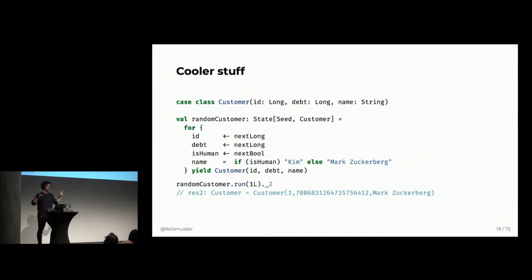So, let's do a bit more contrived example. Now we want to create some random stuff. So, we want to create a random customer. So, then we can pull out some ID for the customer identification. We pull out the debt. We create some debt. And then we decide, is this a human or not? If it's a human, we name him the human Kim. Otherwise, it's Mark Zuckerberg. And then, of course, we can run this as well to create a random customer. And, of course, I experimented with this until I got Mark Zuckerberg.